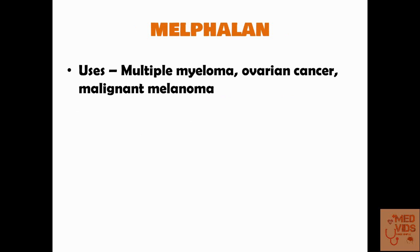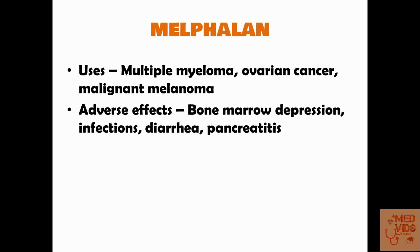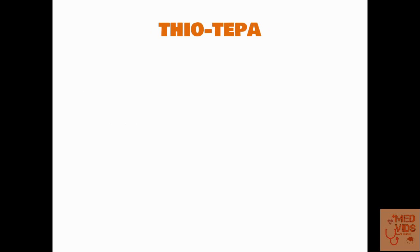Melphalan is an alkylating agent used in multiple myeloma, ovarian carcinoma, and malignant melanoma, with a similar mechanism of action to other alkylating agents. Adverse effects include bone marrow depression, infections, diarrhea, and in some cases pancreatitis.